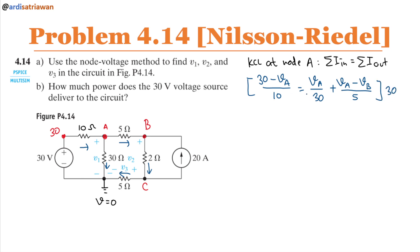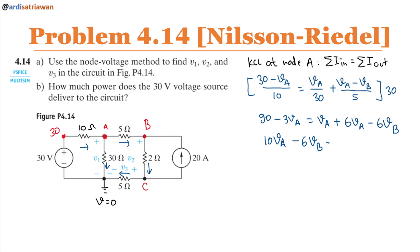Multiplying both sides by 30 to clear denominators, we get 90 − 3Va = Va + 6Va − 6Vb, which simplifies to 10Va − 6Vb = 90. Let's save this as equation number 1.